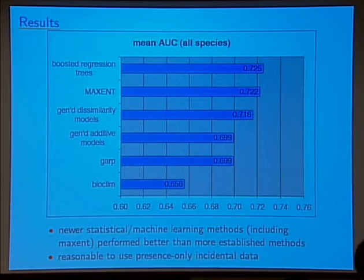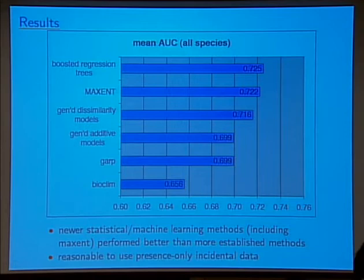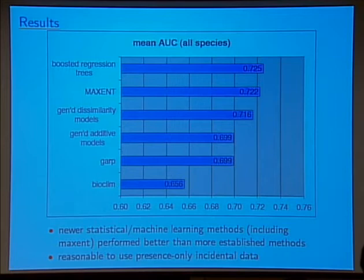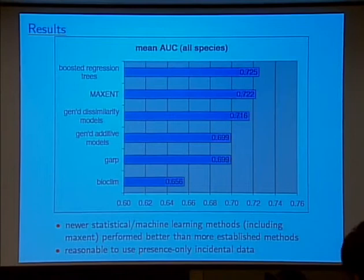An audience member asks if this is the relaxed MaxEnt — it is. What's a statistically significant difference? Between the top methods and the lower ones, the difference does appear to be statistically significant, roughly a full percentage point. Of the 16 methods, only two were designed specifically for positive-only data: MaxEnt and GARP. This also indicates that it's reasonable to use presence-only or incidental data.